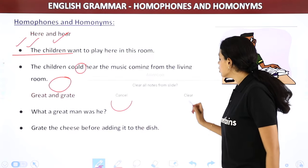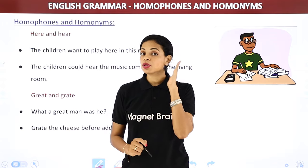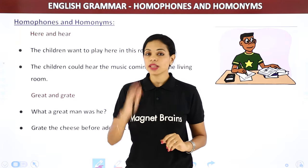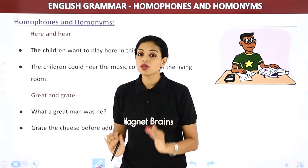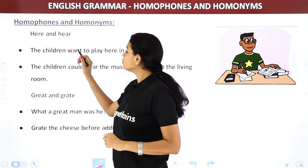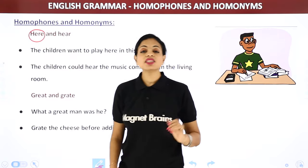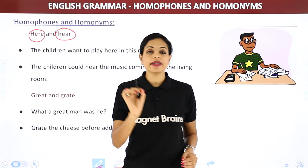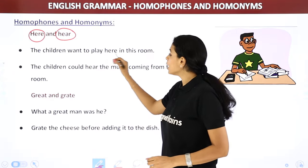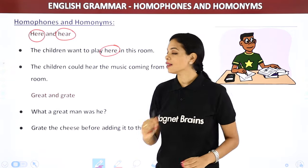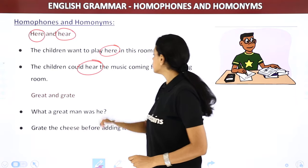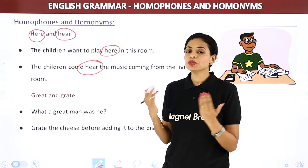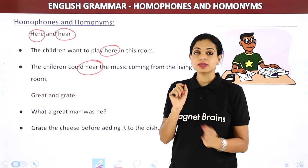Another example — 'here' and 'hear.' 'Here' (h-e-r-e) means 'this place' — 'come here' or 'the children want to play here in this room.' 'Hear' (h-e-a-r) means to listen — 'I want to hear some music' or 'the children could hear the music coming from the living room.' Same sound, different spellings, different meanings.